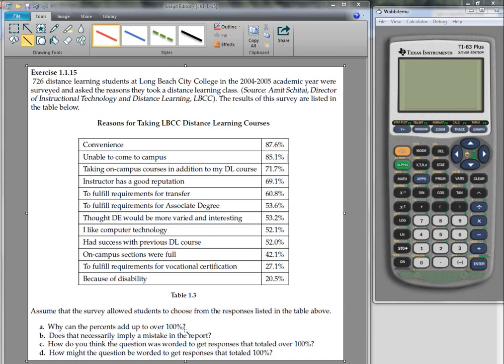Now it says, why can the percents add up to over 100%? This reason would be that you may have more than one reason for taking an online course.